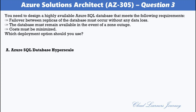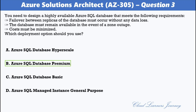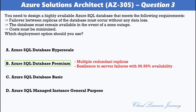The options are: A. Azure SQL Database Hyperscale, B. Azure SQL Database Premium, C. Azure SQL Database Basic, D. Azure SQL Managed Instance General Purpose. The correct option is B. Azure SQL Database Premium. The Premium tier supports multiple redundant replicas for each database, automatically provisioned in the same data center within a region. It leverages SQL Server Always On technology and provides 99.99% availability.